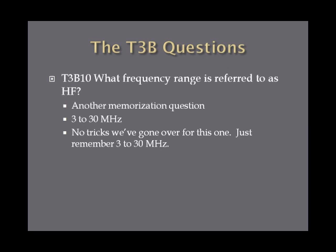What frequency range is referred to as HF? You're going to have to flat-out memorize this one: it's 3 to 30 megahertz. If you've memorized the HF frequency bands, remember that 3 to 30 megahertz covers roughly the 80-meter band at 3 MHz and the 10-meter band at 30 MHz. So remember: 3 to 30 megahertz is HF.